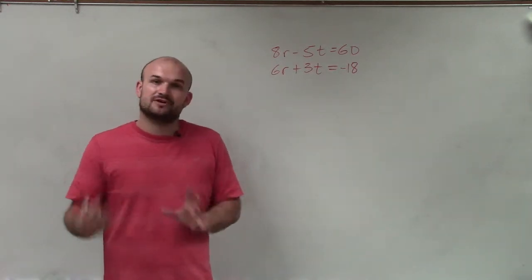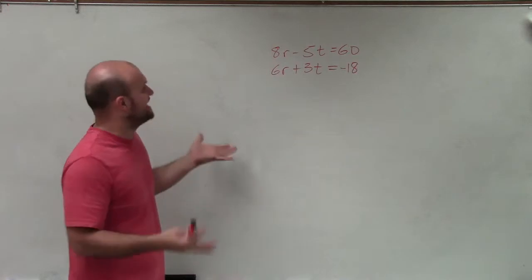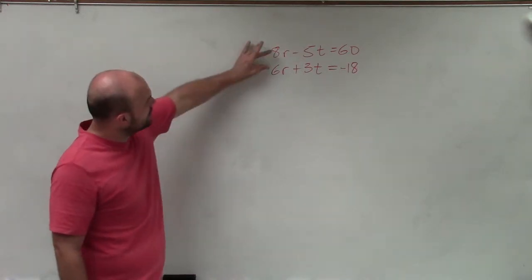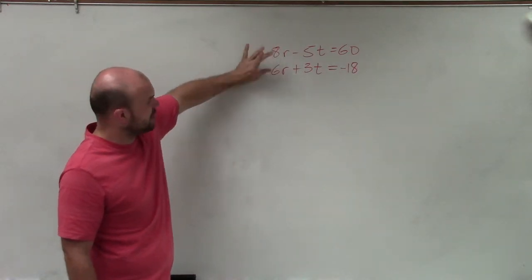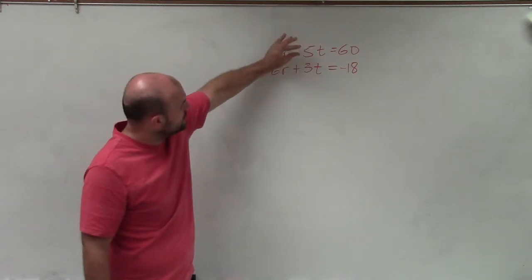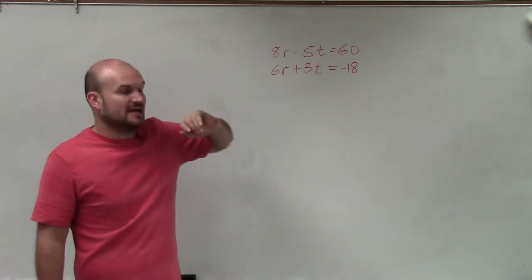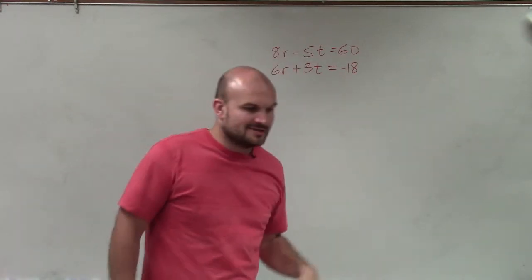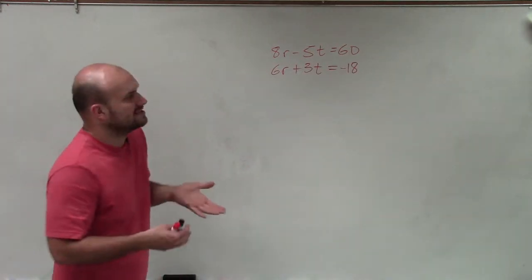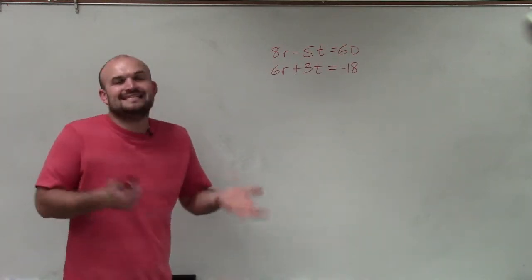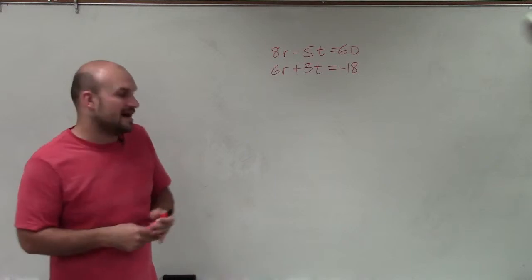Forget about the value, if it's positive or negative, just get them to be exactly the same. So what I have is for my coefficients of r are 8 and 6, and I have my coefficients of t are negative 5 and 3. So I want to see what is the smallest LCD or what would be the easiest LCD that I can obtain.